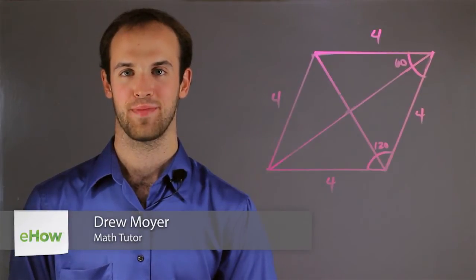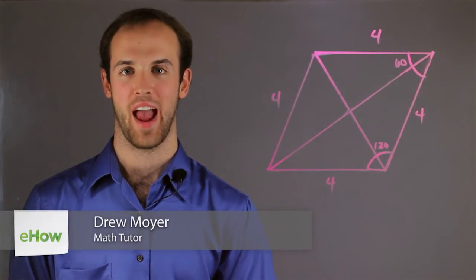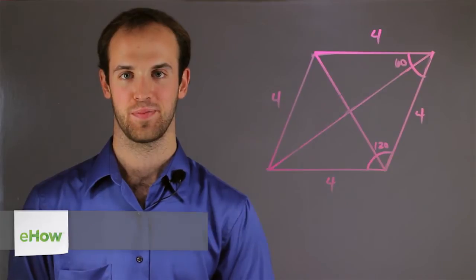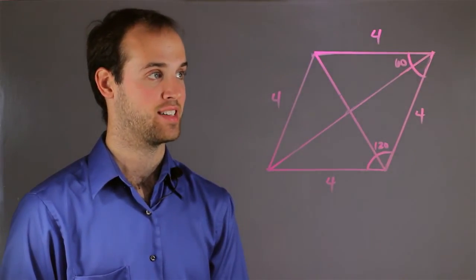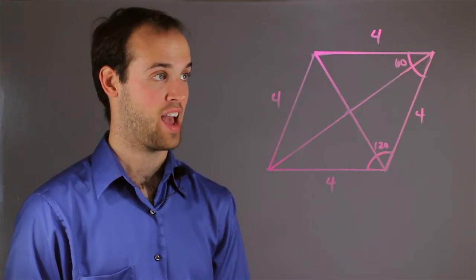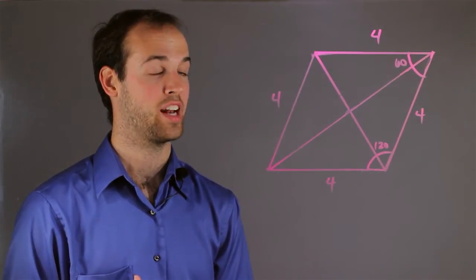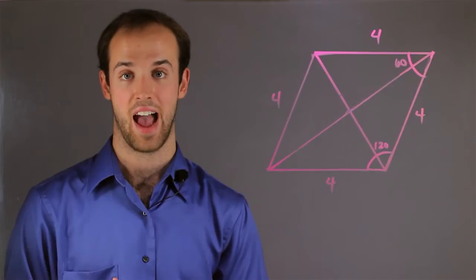Hi, I'm Drew Moyer and this is a formula for angles to diagonals. Let's suppose I'm given this rhombus and I know the length of the sides as well as the measure of the angles. But now I'm told that I need to find the length of the diagonals.